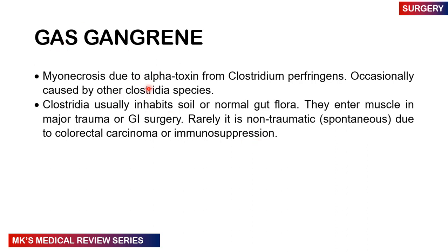Gas gangrene is where you have myonecrosis happening because of toxins produced by Clostridium perfringens, which produces alpha toxins. Occasionally it can also be caused by other Clostridia species. Clostridium is found everywhere in the soil and can be found as normal gut flora. It usually enters muscle through major trauma or GI surgery. Rarely it can be non-traumatic — spontaneous — due to colorectal carcinoma or immunosuppression.